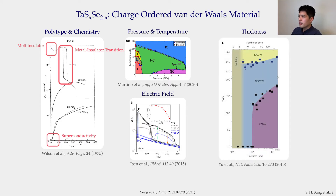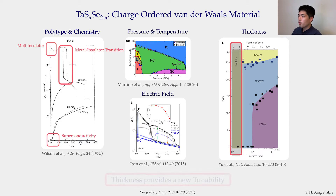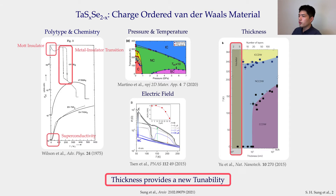What we are looking at here is how CDW states change with thickness. We see, for example, that the CCDW gives way to the NC phase as we decrease the thickness. If we go to the 2D limit, it has been reported that CDWs disappear entirely. Therefore, thickness provides a new tuneability, and for this talk we show a new way to restore charge order in this 2D regime.